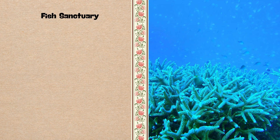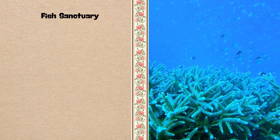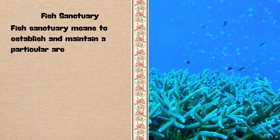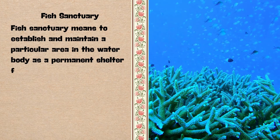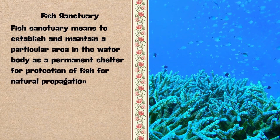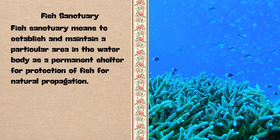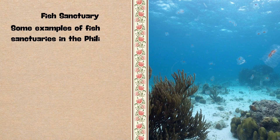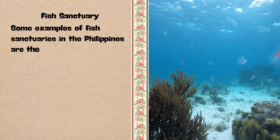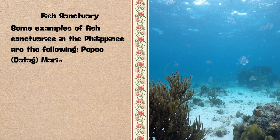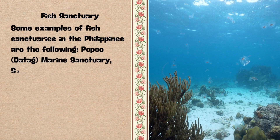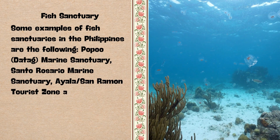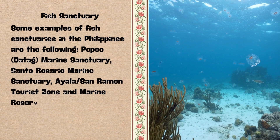Fish sanctuary means to establish and maintain a particular area in the water body as a permanent shelter for the protection of fish for natural propagation. Some examples of fish sanctuaries in the Philippines are: Papu Daydig Marine Sanctuary, Santo Rosario Marine Sanctuary, and Ayala San Ramon Tourist Zone and Marine Reserve.